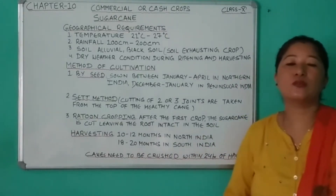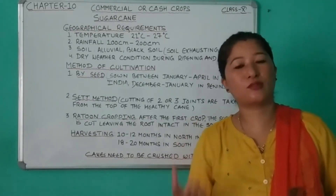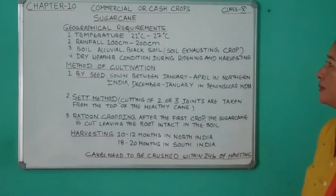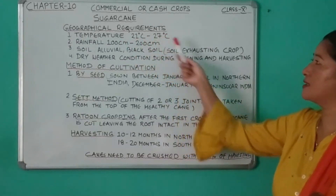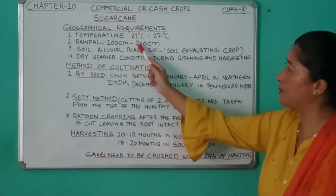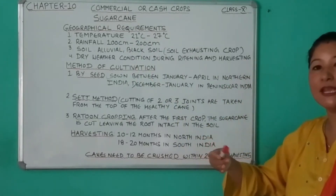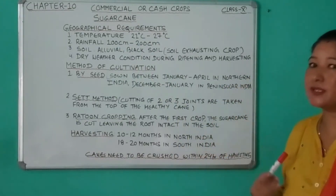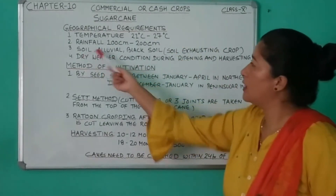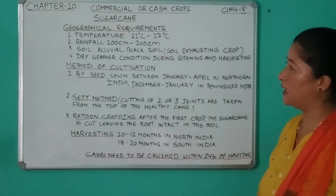Now let's take the last crop — sugar cane. Sugar cane is a tall perennial tropical and sub-tropical crop, mostly grown for its juice. The geographical requirements are: temperature 21°C to 27°C, rainfall 100 cm to 200 cm. If water supply is less, it will produce a fibrous crop. Alluvial and black soils are best suited for sugar cane cultivation.